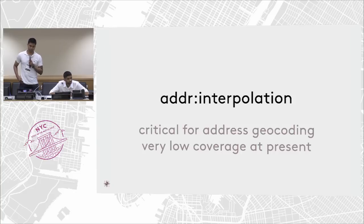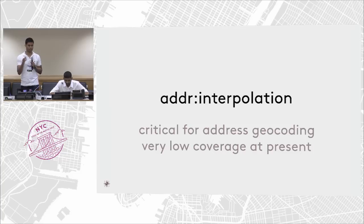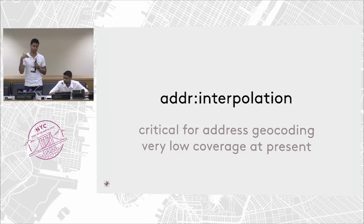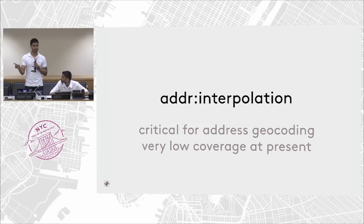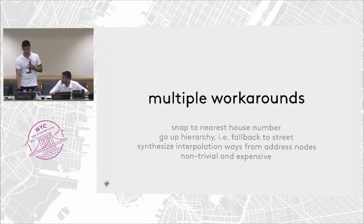Another important address tag is address interpolation. This tag is instrumental for street-level interpolation — it helps you define an address range on a way. If you have a street called Main Street with five houses from 100 to 105, and not all of them have individual nodes, but the way itself defines house number ranges from 100 to 105, that information is really valuable. If someone searches for 103 Main Street and that node doesn't exist, we still have Main Street and know that 103 falls in the range of 100 to 105, so we can interpolate and give an estimated location.